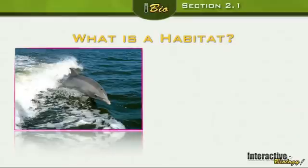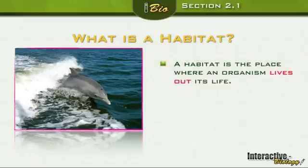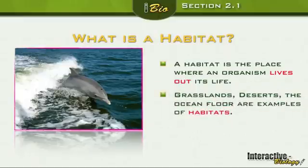What is a habitat? A place where an animal lives. So it's where you live, right? A habitat is the place where an organism lives out its life. What's the habitat of a dolphin? The ocean. Examples of habitats: grasslands, deserts, the ocean floor. Those are all examples of habitat.